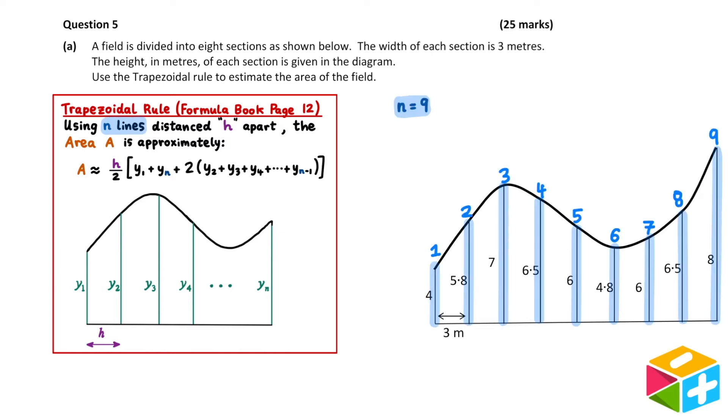n is referring to the number of vertical lines we're using to estimate the area. In our picture we have 9 lines, so n is equal to 9. h refers to the distance between the lines. In our picture this distance is labeled as 3 meters, so h is equal to 3.